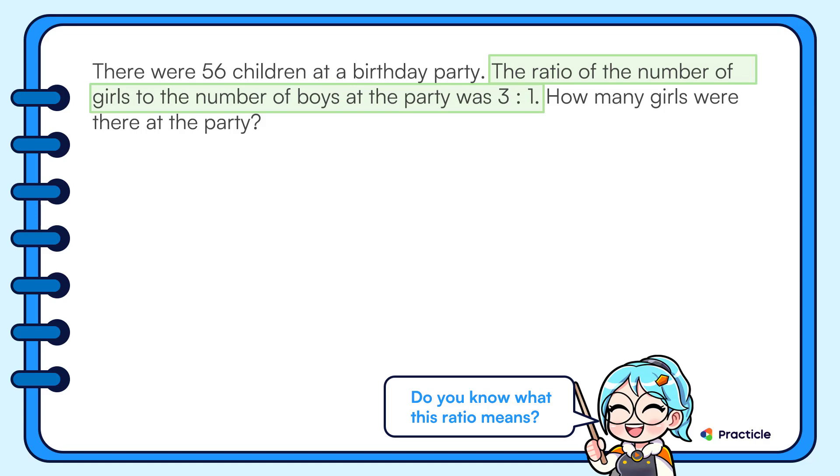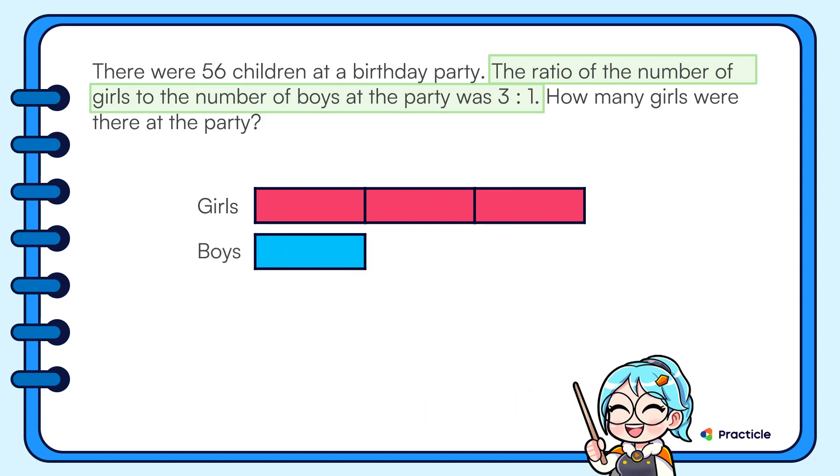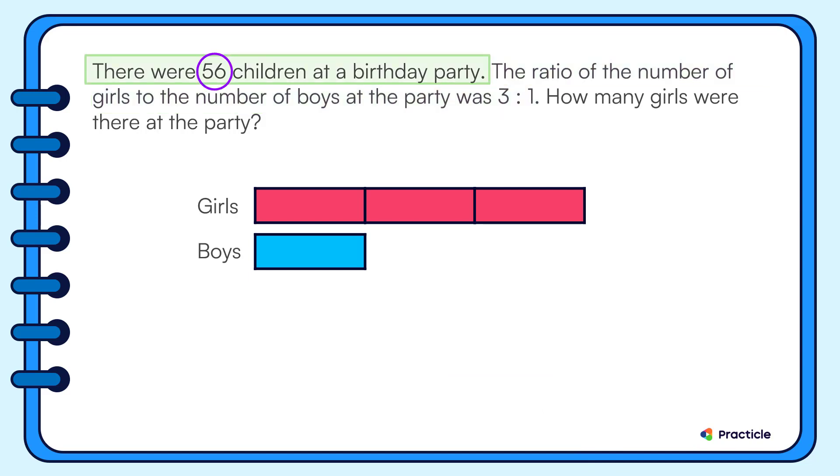Let's represent this with a bar model. Here are three units to represent the number of girls and one unit to represent the number of boys. Great! Since we already know the total number of children at the party, let's put that in our model as well.